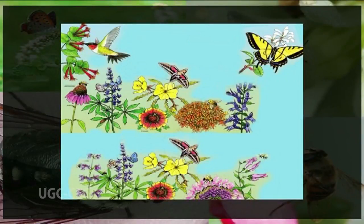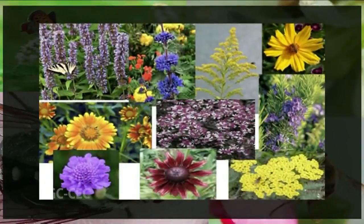Without insects and birds to carry pollen, many plants would not be able to share their genetic material with one another. These pollinators do not intentionally carry pollen between plants; they only use plants as a food source. In return for their pollinating service, these insects and birds are rewarded. Flowering plants depend upon external agents to carry pollen from male parts in the flowers of one plant to the female parts of another plant, or even to the same plant.